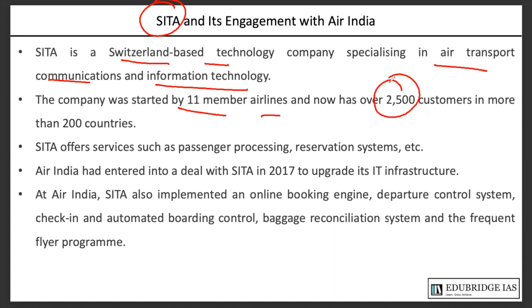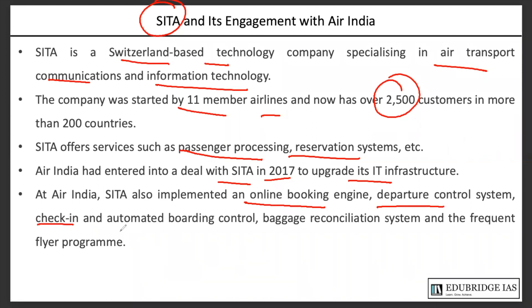Air India had a deal with SITA in 2017 to upgrade its IT infrastructure, including production control, check-in systems, automated boarding control, work and reconciliation systems, and the frequent flyer program. Air India is part of Star Alliance and has a frequent flyer program through which data was leaked.